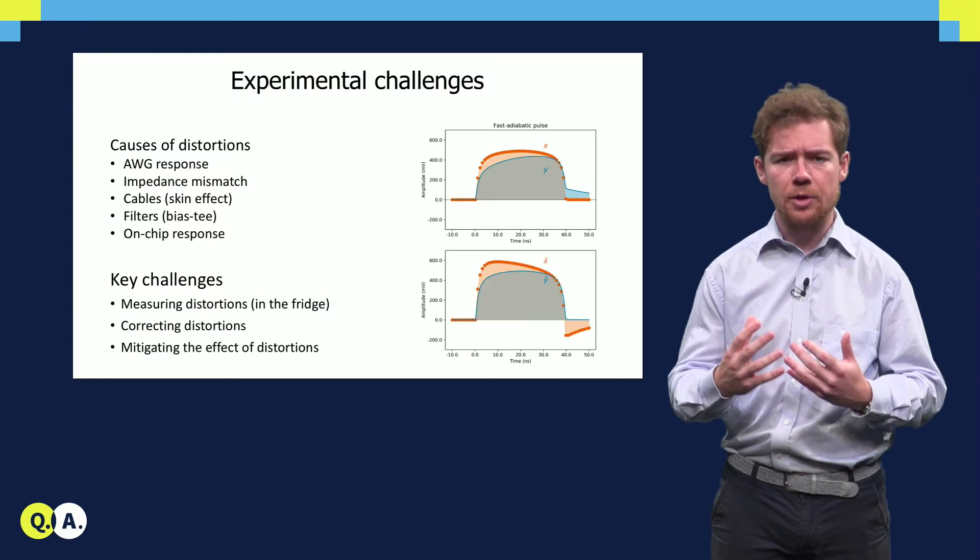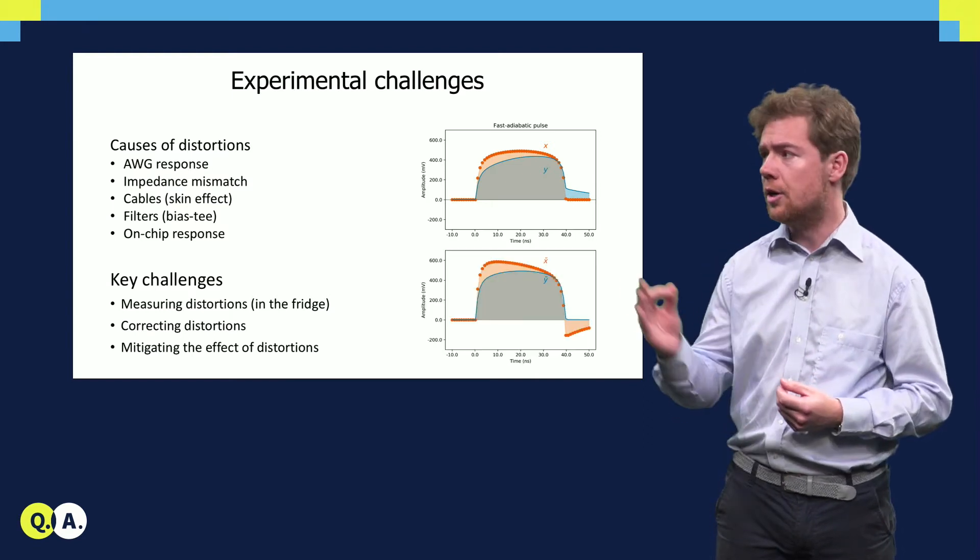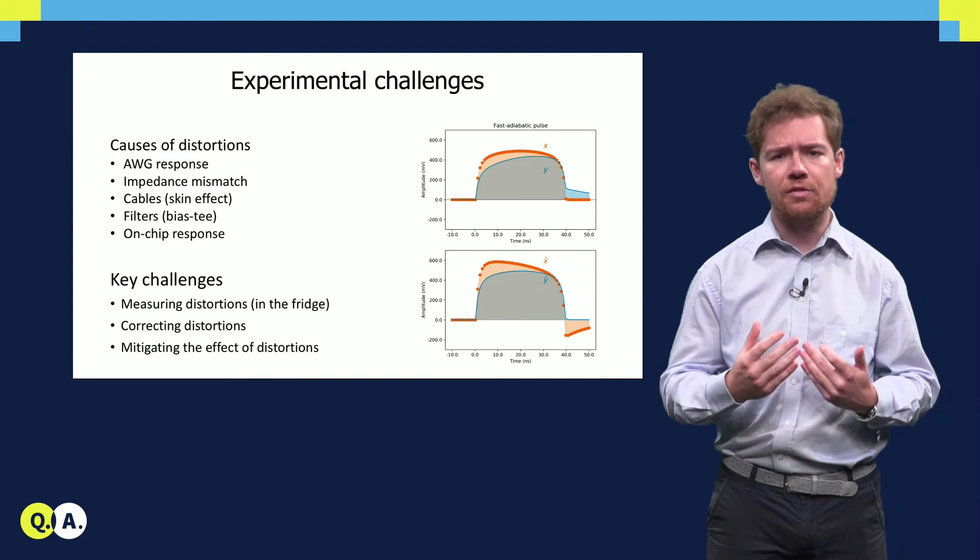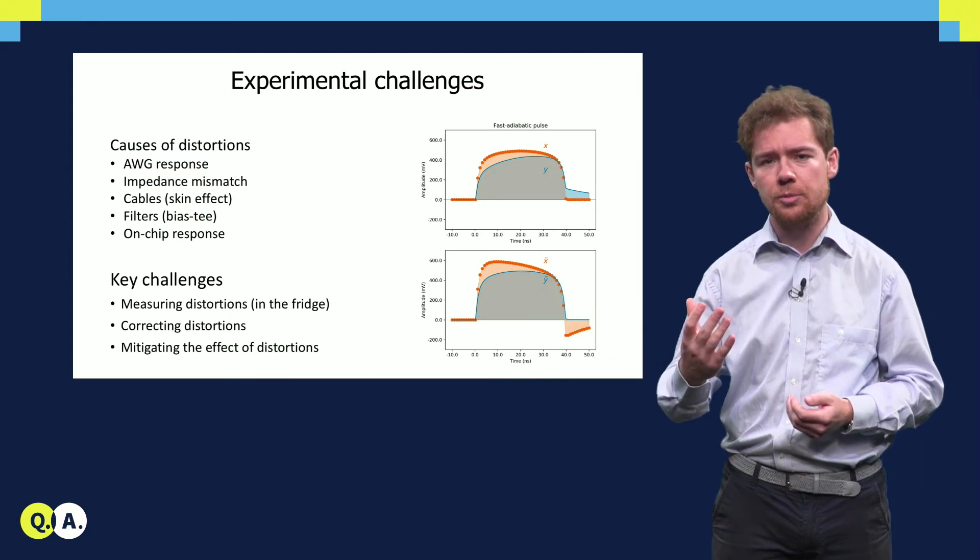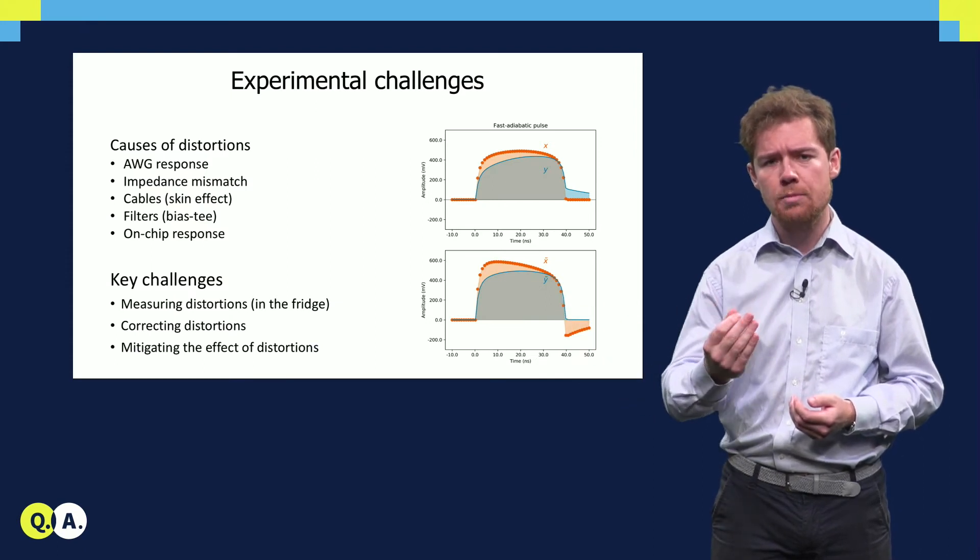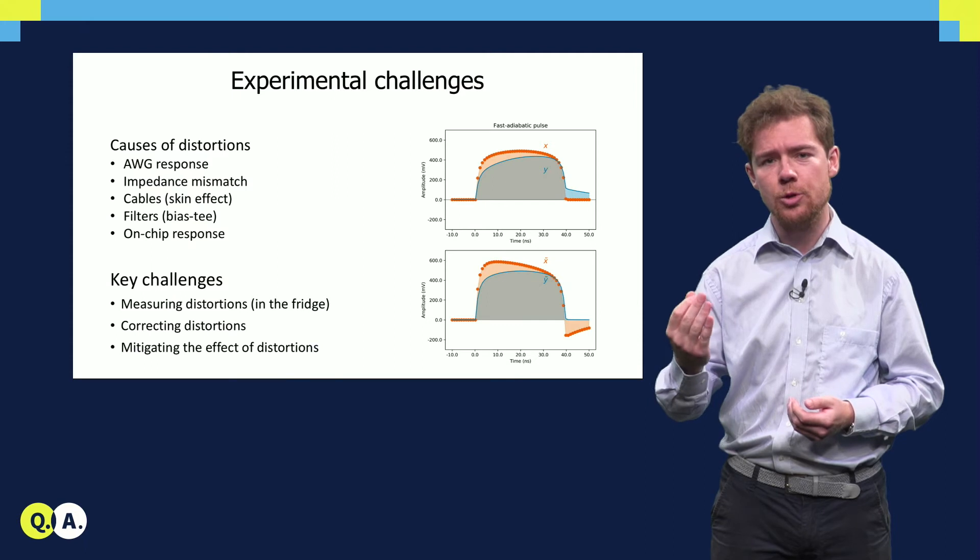These effects are typically corrected by pre-distorting the waveform X with a filter designed to invert the distortions, turning it into X tilde, so that the qubit experiences not the pulse Y, but Y tilde, that is equal to the intended waveform.